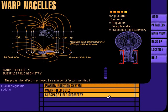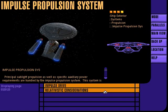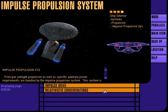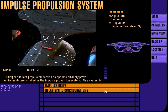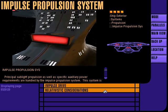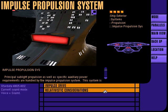Subspace field geometry refers to the specific energy field alignments associated with a particular starship. Principal sublight propulsion as well as specific auxiliary power requirements are handled by the impulse propulsion system, powered by a deuterium fusion reaction used in conjunction with a compact space-time driver coil.